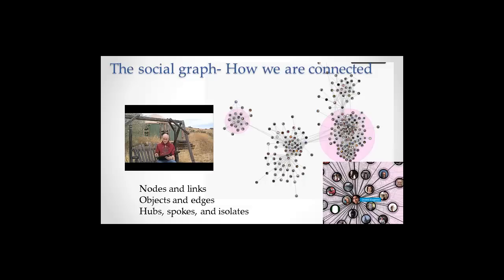As you can see from this diagram, there are clusters. These are all the people I know. This is my social graph, and you can see that they're clustered.